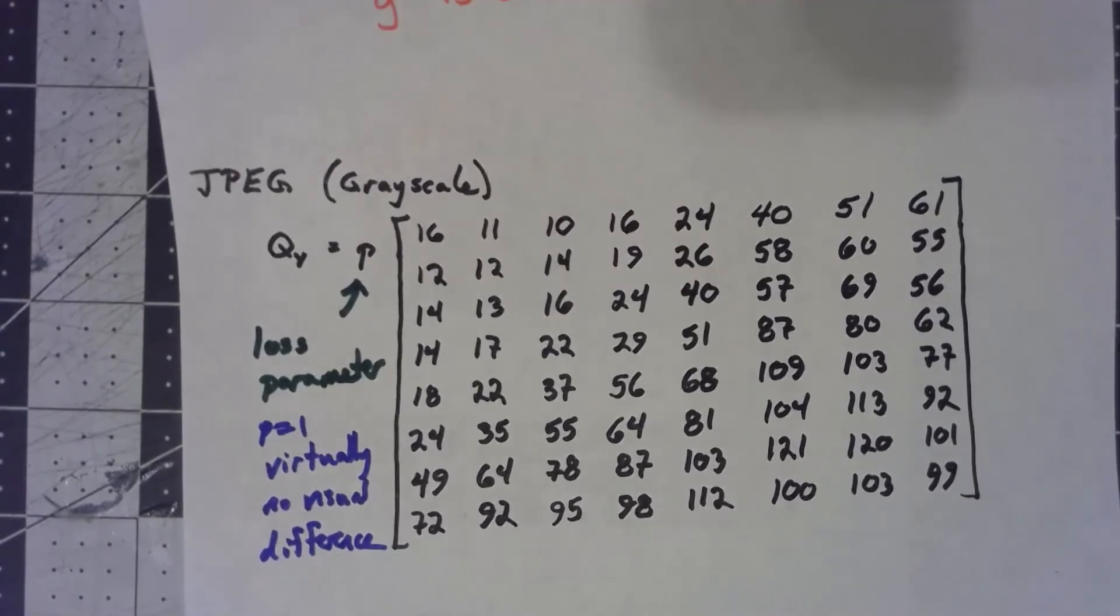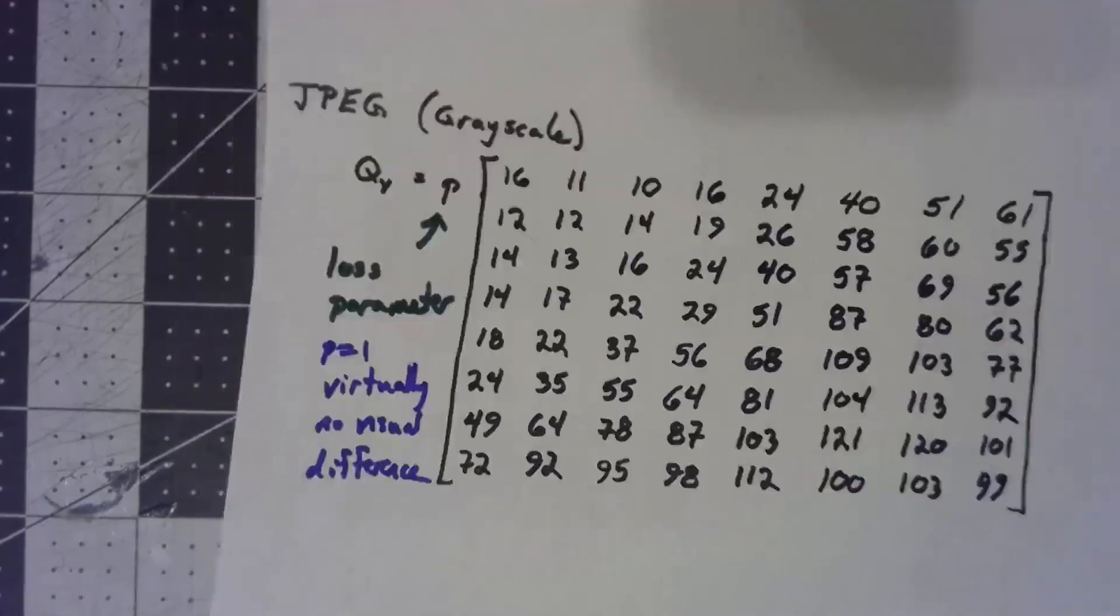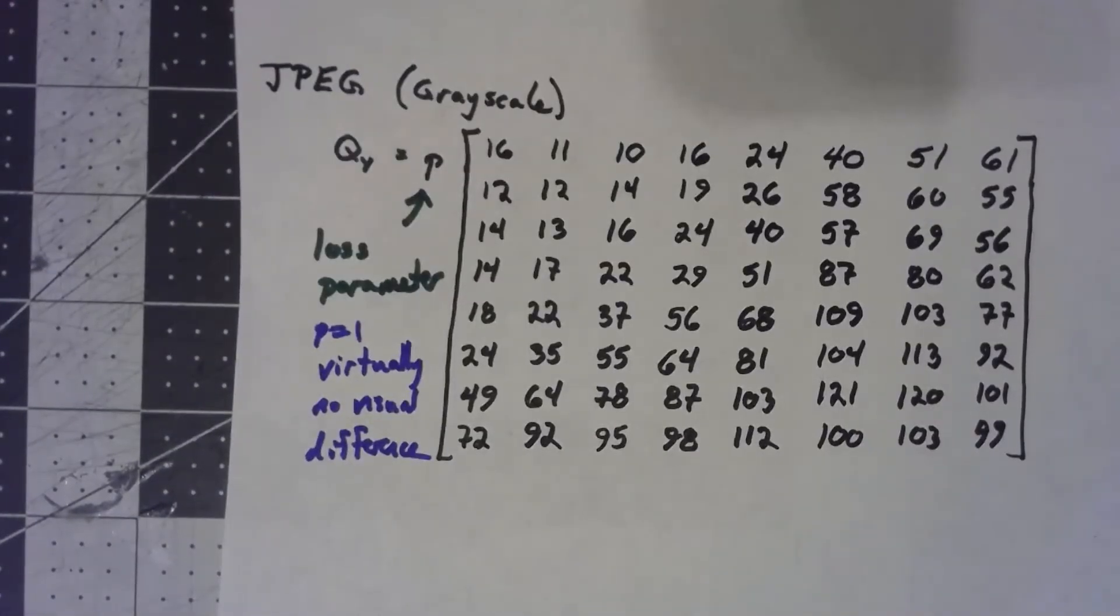Well, we're going to fix this, and we're going to talk about this in a video or two, using something called Huffman coding. And Huffman coding is a way of having different entries in a matrix require different number of bits. And we'll talk about how that works in a moment, like I said, in a video or two.